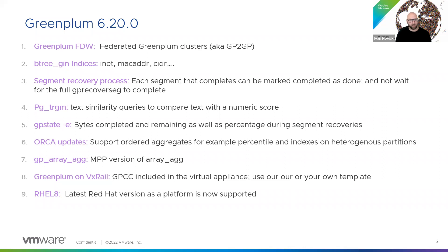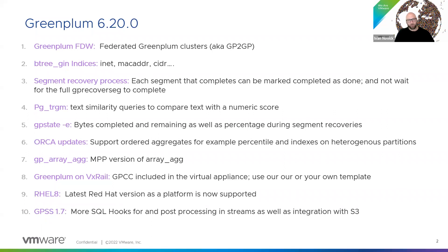Number ten, last but not least: the streaming server. We have a new version of the streaming server 1.7. The streaming server does continual data loading from something like Apache Kafka into GreenPlum. Now we have even more hooks and ways to process those streams — as the data is streaming, you can pre-process and post-process using SQL. We also have in beta a connection with S3, so you can be streaming from S3. If you're still doing daily ETL, maybe it's time to start thinking about moving towards real-time and getting your data warehouse continually updated.